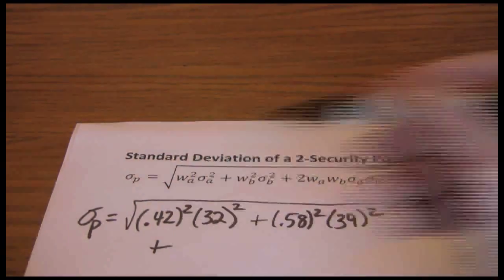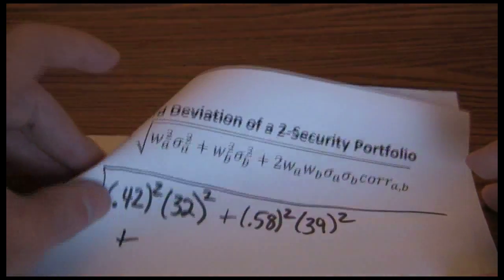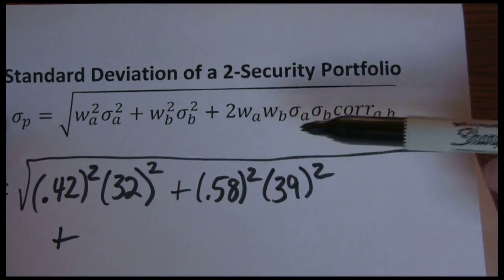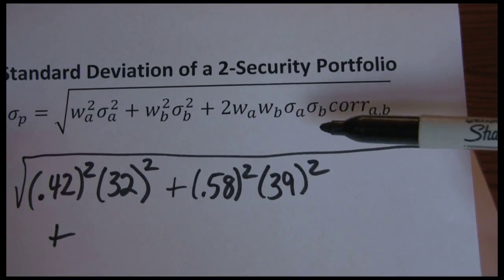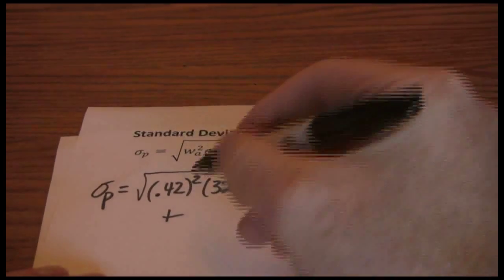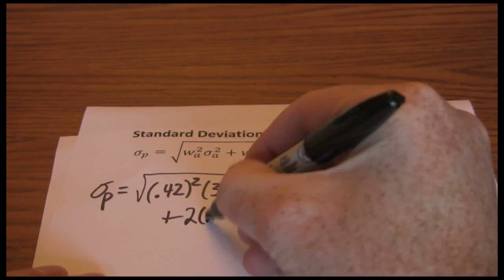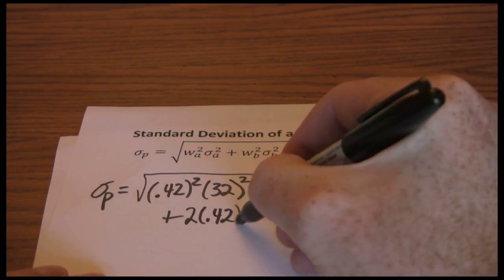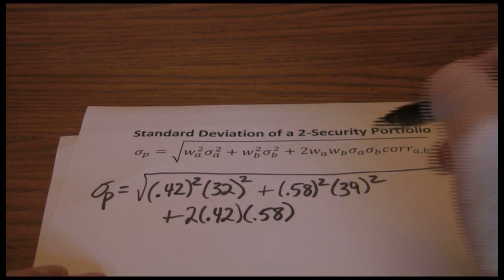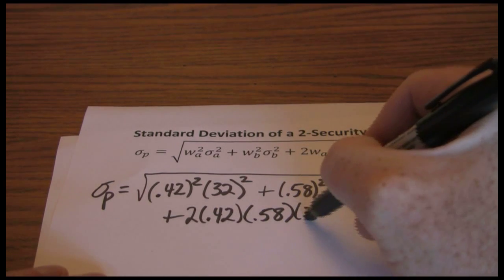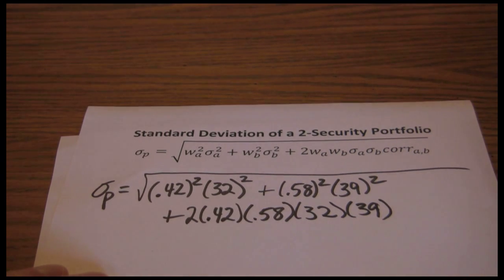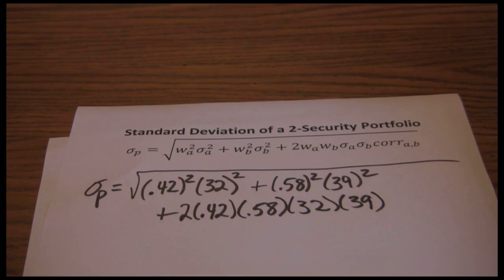And now we have the last segment. Two times the weight in a times the weight in b times the standard deviation of a times the standard deviation of b times the correlation between a and b. So 2 times the weight in a times the weight in b times the standard deviation of a times the standard deviation of b.